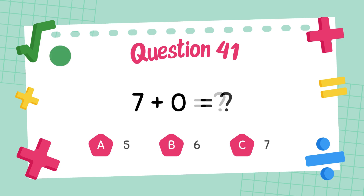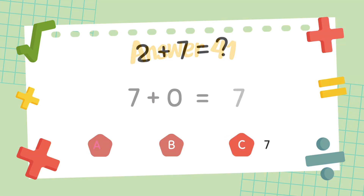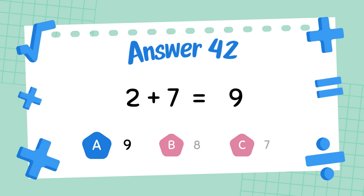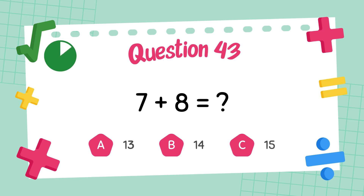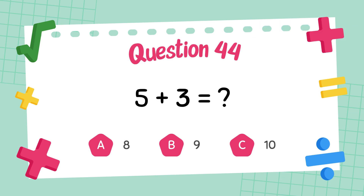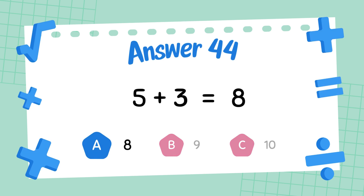What is 2 plus 7? The answer is 9. What is 5 plus 3? The answer is 8.